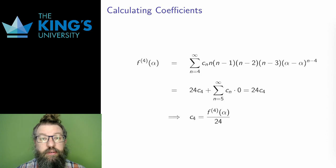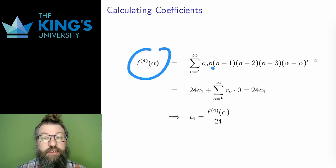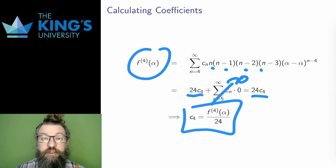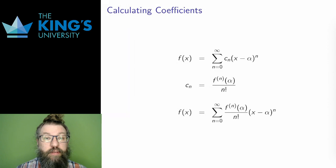I just continue with this pattern. Looking at the fourth derivative, the c4x to the 4 term will have a 4, a 3, and a 2, pulled down by the power rule, which produces 24c4 as the new constant. Evaluated at the center point removes all the other terms. Therefore, the c4 coefficient is the fourth derivative evaluated at the center point, now divided by 24.